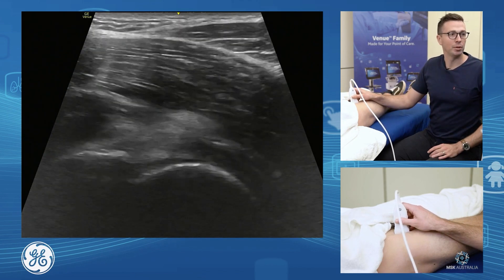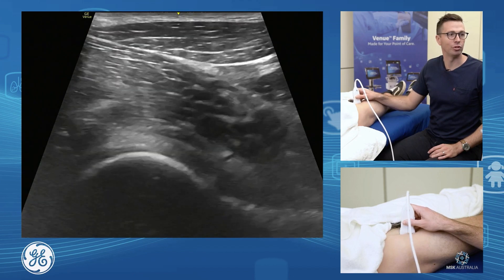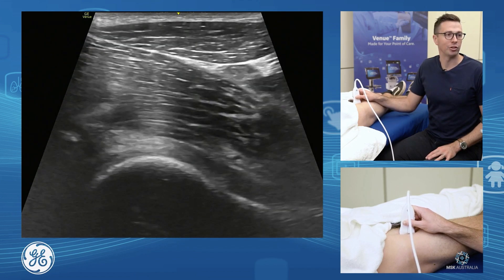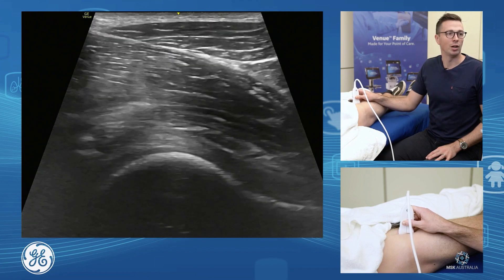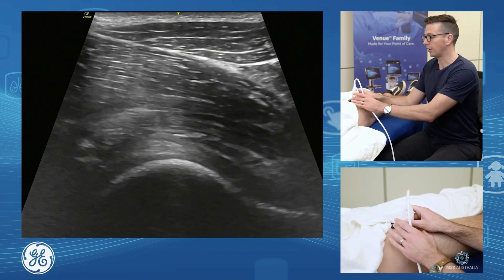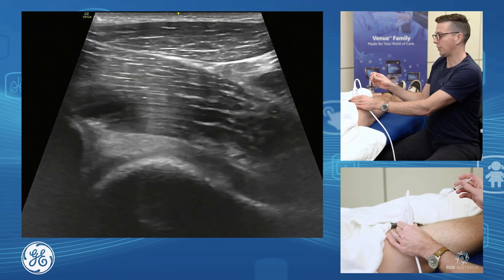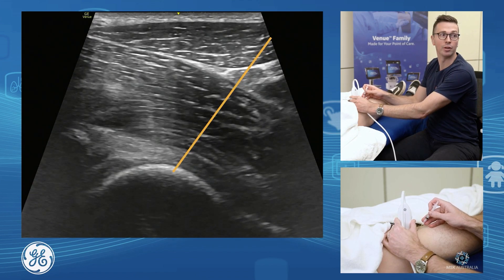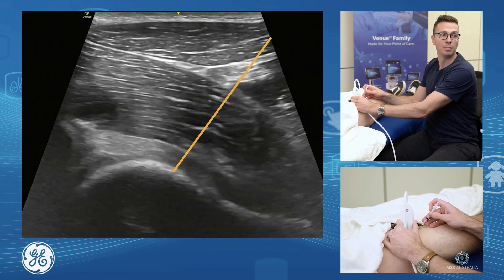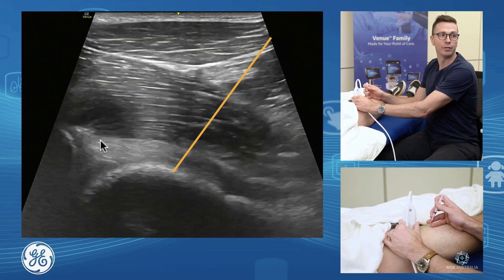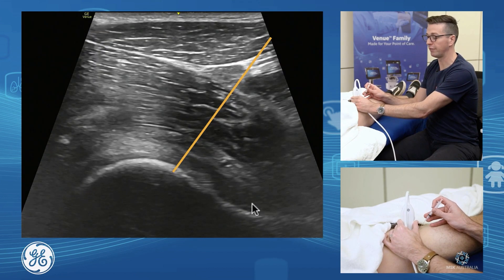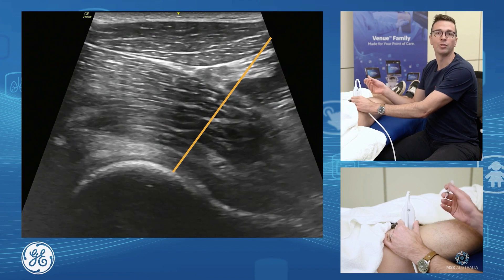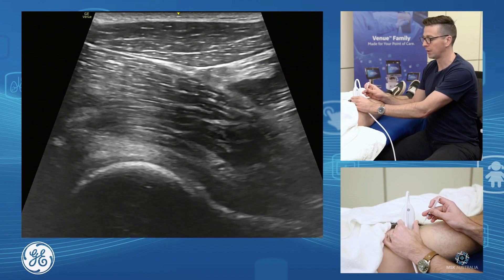For an anterior hip injection or aspiration — if they have an effusion, you want to see what's causing it, assess fluid contents, rule out infection, or inject the hip joint — I like a longitudinal approach. Come in longitudinally from an inferior aspect and bring the needle down through here. We drop down and hit on that head-neck junction. As long as you get anywhere underneath the iliofemoral ligament, you're within the joint. As you inject, you'll see it fill up the space and see that capsule lift off.